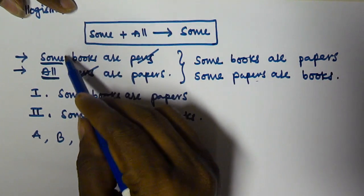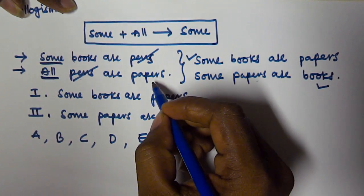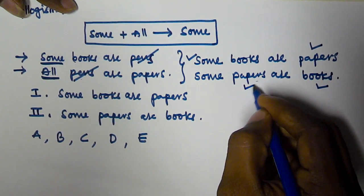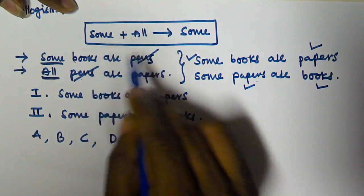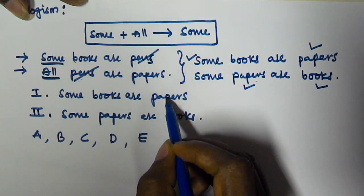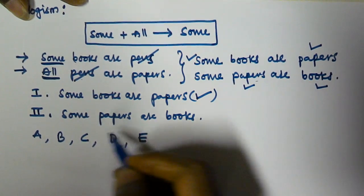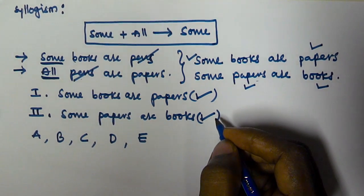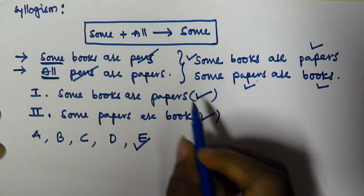So the first time we took books as the subject we got 'some books are papers,' and the second time we took papers as the subject we got 'some papers are books.' Whenever sum plus all applies and the predicate of the first and subject of the second are equal, we can derive two conclusions. Comparing with the given conclusions: some books are papers matches conclusion 1, and some papers are books matches conclusion 2. Both conclusions are true, so we select option E.